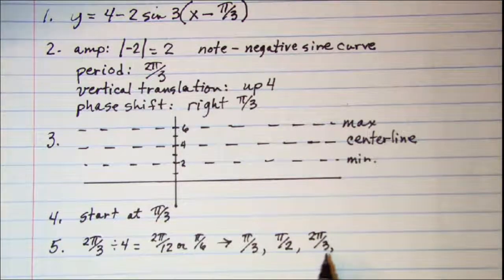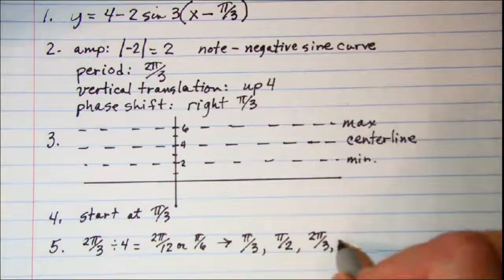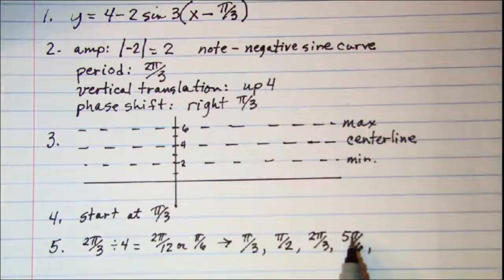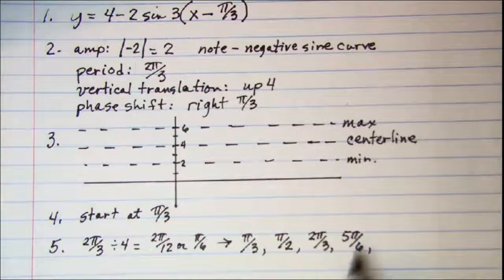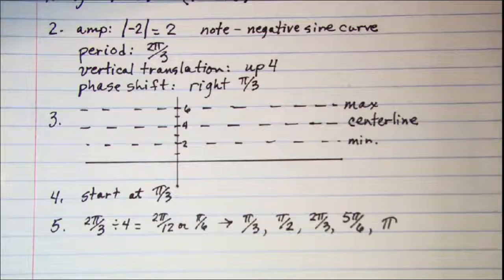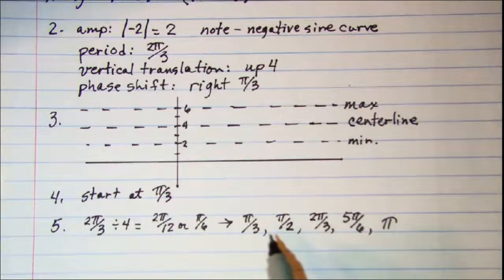And then add pi over 6 to that, we get 2 pi over 6. And then add pi over 6 to that, and we get just pi. Now it may be helpful for you to have a common denominator on these.